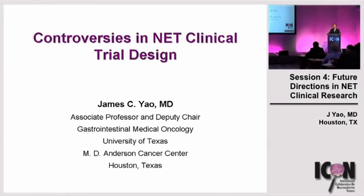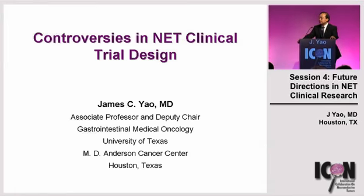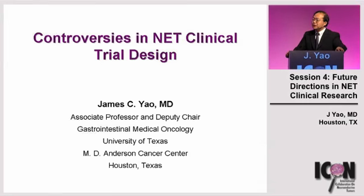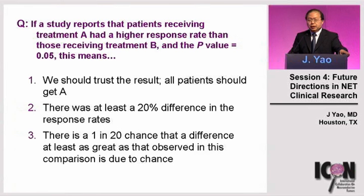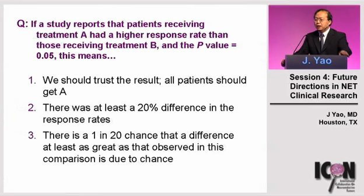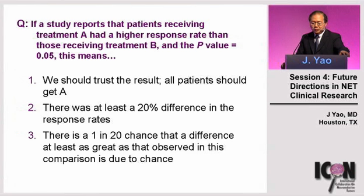We're going to begin session number four, which is going to be on novel clinical research in neuroendocrine tumors and future directions. With the next session, we're going to begin with just a couple of questions. The first part of the session, I'm going to talk about issues in clinical trial design, and then we're going to move on to biomarkers. To open this part of the session, we're going to take advantage of the audience response system and pose a couple of questions about the interpretation of clinical research results.